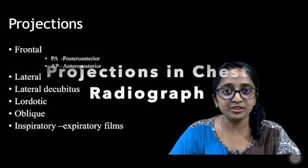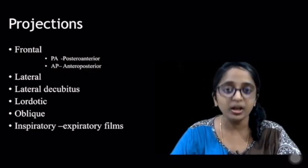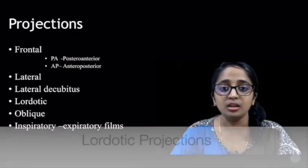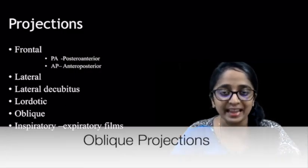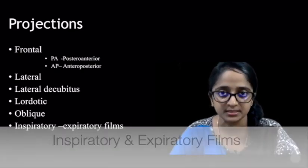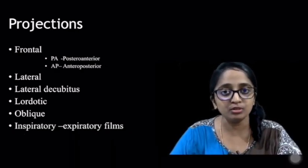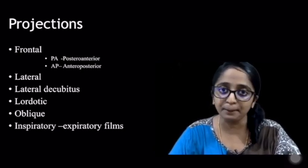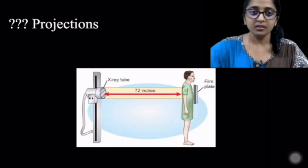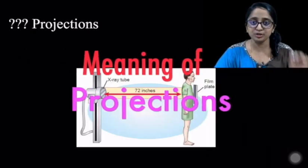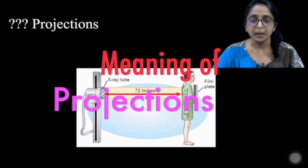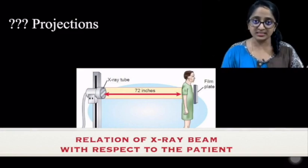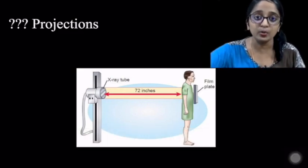Let's look at the projections in chest radiograph. They include the frontal, the lateral, the lateral decubitus, the lordotic, the oblique, and the paired inspiratory-expiratory films. Within the frontal projection, you have two subtypes: the PA, known as posterior-anterior, and the AP, known as anterior-posterior. Before going into further details, we should know what projections mean. By projection, we mean the relation of the x-ray beam with respect to the patient.